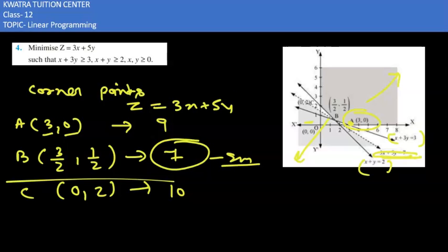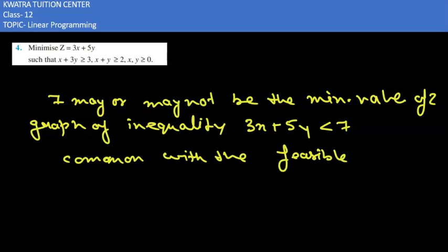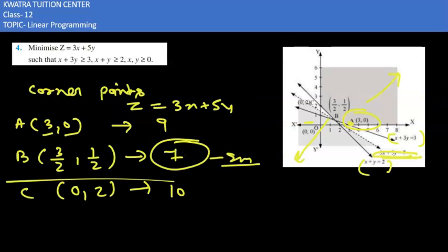For this constraint we can check whether the half plane is going to be having common region with the feasible region or not. According to the diagram which I have shown you, this is the common region, so now we can take these points of intersection where the value of B lies.